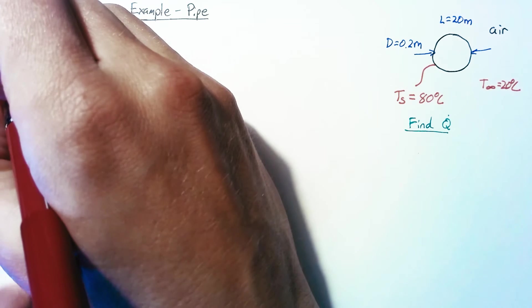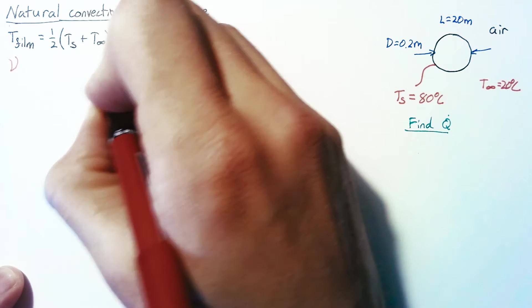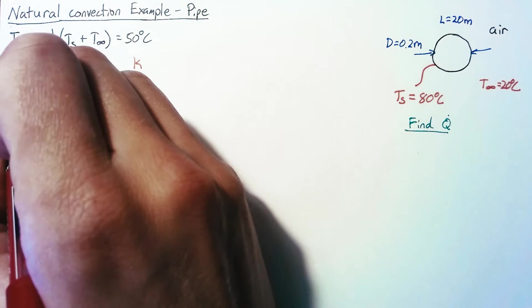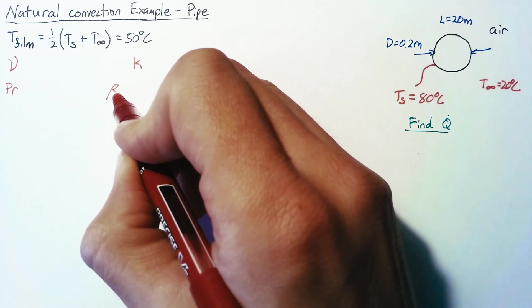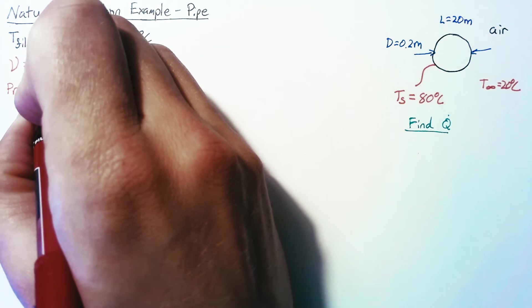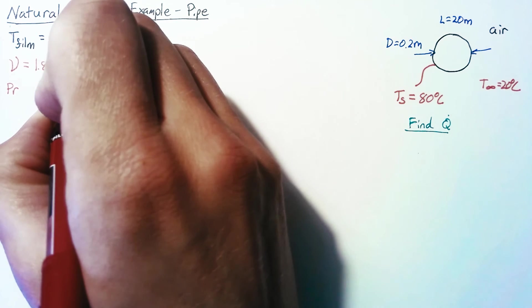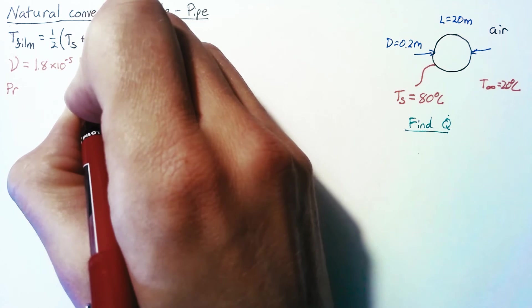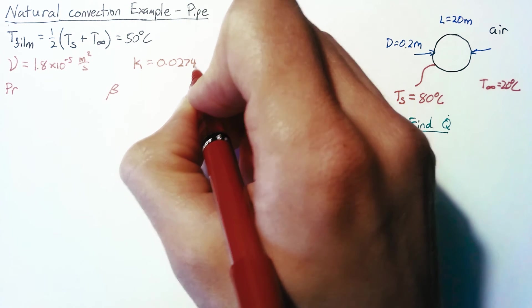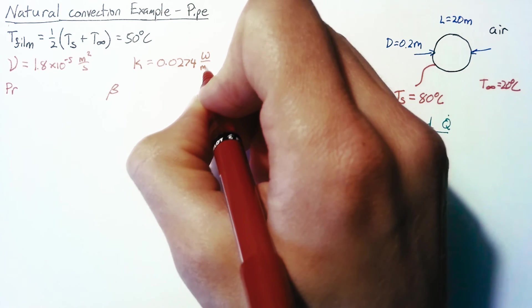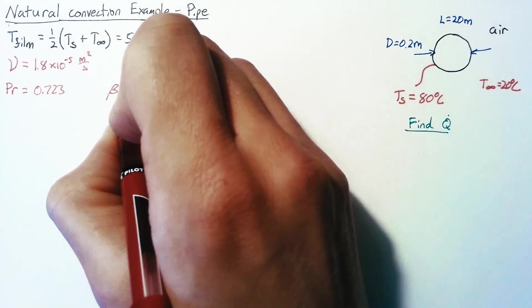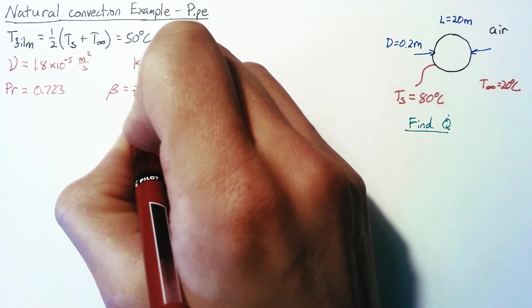So once we have that, we can go to an air table and find nu, our kinematic viscosity, K, our thermal conductivity, our Prandtl number, and then finally beta, which is our volume expansion coefficient. From the table, we find that nu is right around 1.8 times 10 to the negative 5 meters squared per second. Our K value is 0.0274 watts per meters Kelvin. Our Prandtl number is going to be 0.723 and beta is simply 1 over the film temperature.